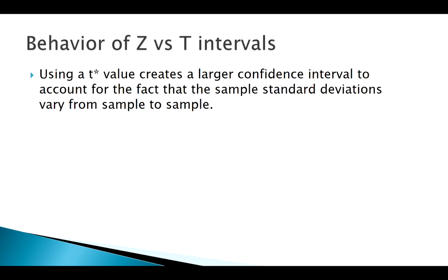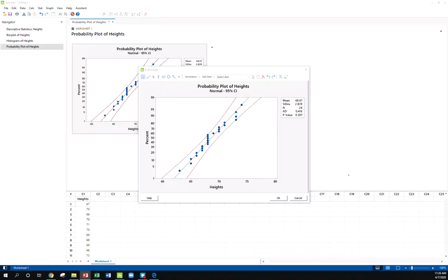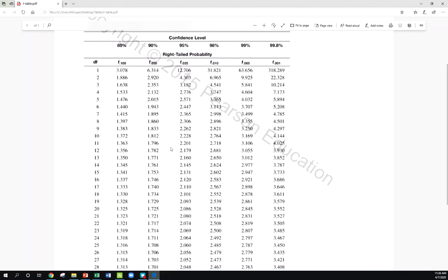In general we also see that t critical values are a little bit bigger than z critical values. We know this point already: as n goes to infinity, then the t distribution moves towards the z. Maybe we could look at that on the table.